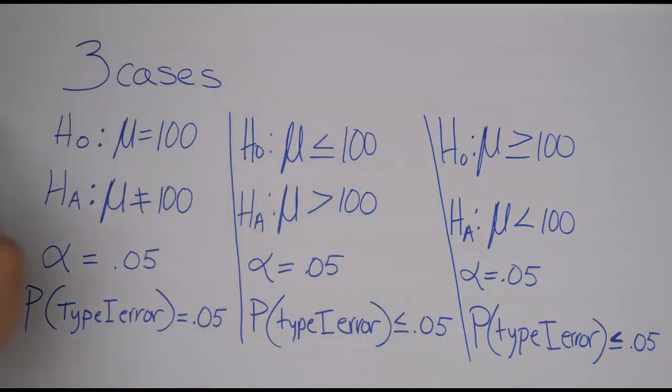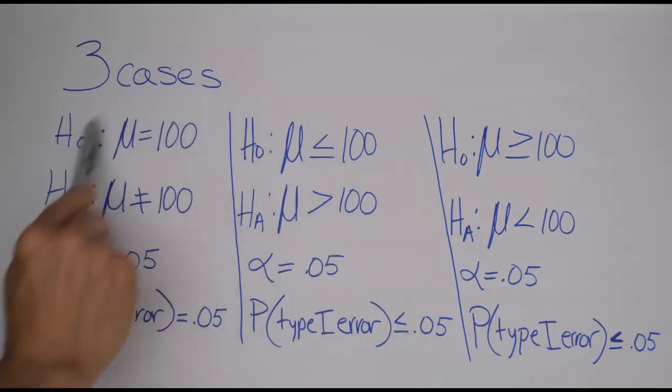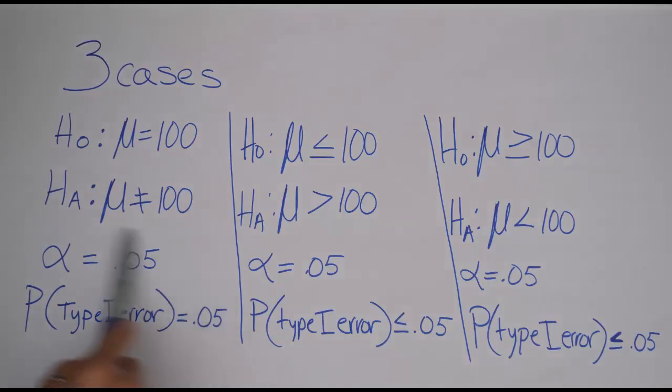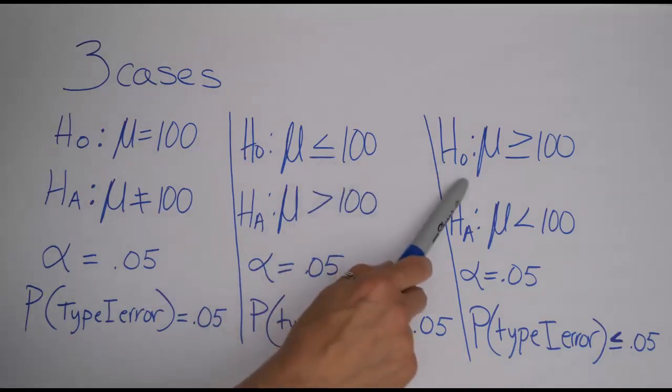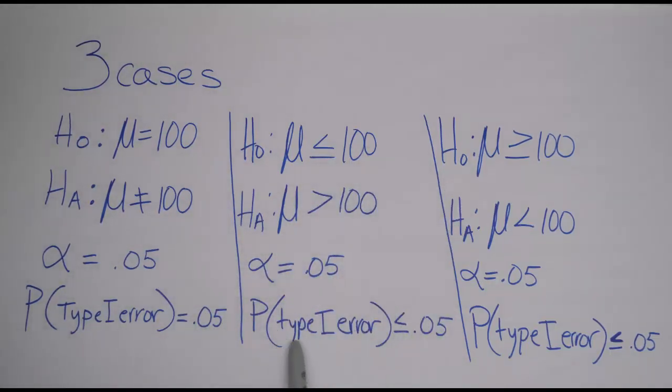If you only have the one case in your class where you've just used equal to, you can just remember this rule, that the probability of a type 1 error is alpha. But if you're in a class that's like mine that allows two other cases for the null hypothesis, then you must realize that the probability of a type 1 error is less than or equal to alpha.